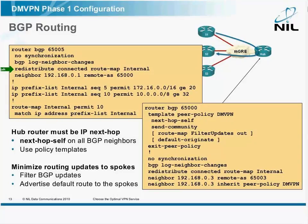If you redistribute connected interfaces into eBGP, you have to be very careful that you don't redistribute the internet interface into eBGP as well, because if you do that, the tunnel endpoint will become reachable over the tunnel. You will get recursive routing and the whole thing will drop down and then be re-established just to drop down again.